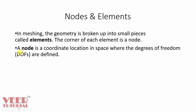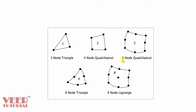We can define a node as a coordinate location in space where the degrees of freedom are defined. For example, in 2D meshing, we have elements like tria element and quad element. The corner points of these elements are defined as nodes — in the case of a triangle we have 3 nodes, and in a quadrilateral we have 4 nodes.